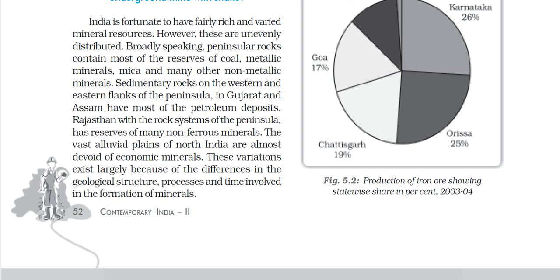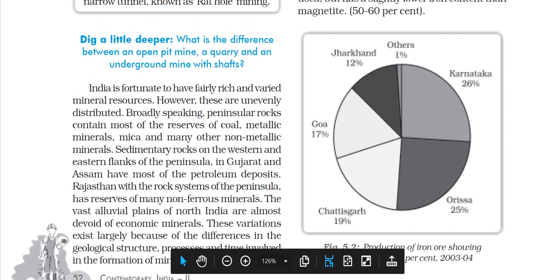Rajasthan, with the rock system of the Peninsula, has reserves of non-ferrous minerals. The vast alluvial plains of North India are almost devoid of economic minerals. These variations exist largely because of differences in their geological structure, processes, and the time involved in the formation of minerals.